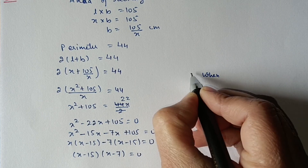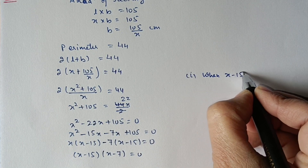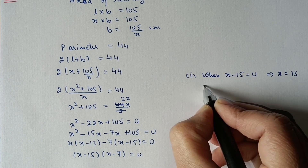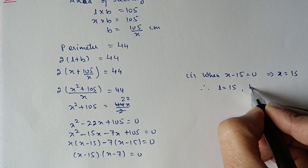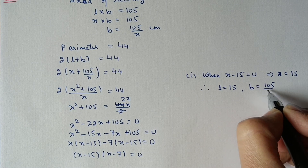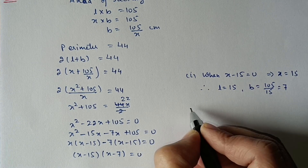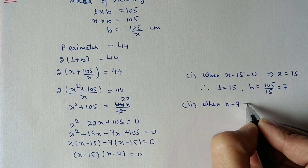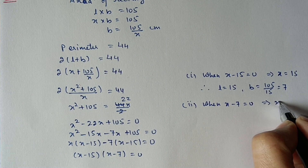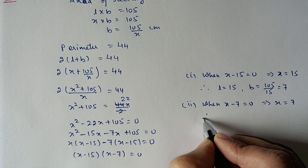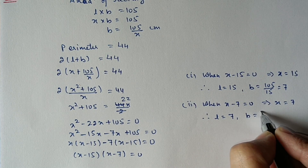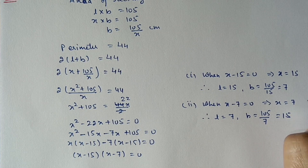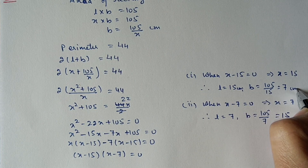Case 1: x = 15, so length = 15 cm and breadth = 105/15 = 7 cm. Case 2: x = 7, so length = 7 cm and breadth = 105/7 = 15 cm. Both cases give the same rectangle with dimensions 15 cm and 7 cm.